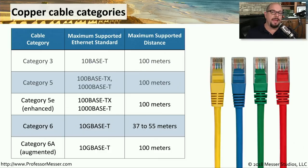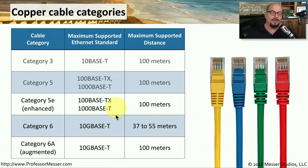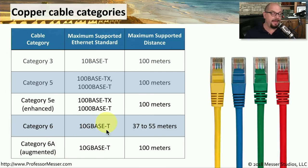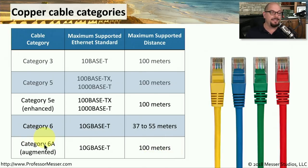There were some minor changes made to the category 5 standard, creating the category 5E standard — the E stands for enhanced. It still allowed us to run 100 base-TX and 1,000 base-T Ethernet to 100 meters, but with some minor enhancements. When we jumped to 10 gigabit networking using 10G base-T, we could network 37 to 55 meters using category 6 cables, and improve that distance to 100 meters using category 6A — the A stands for augmented.